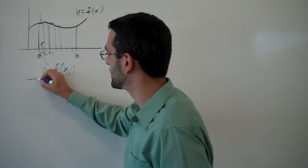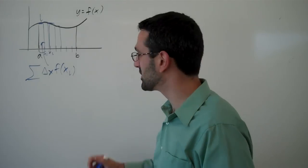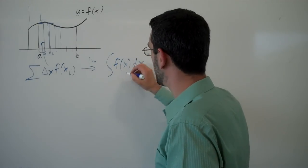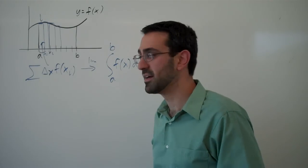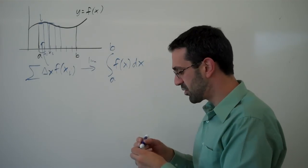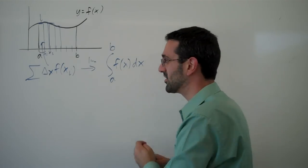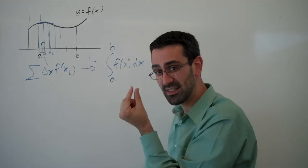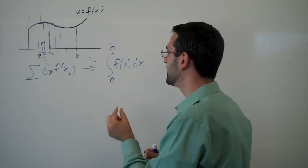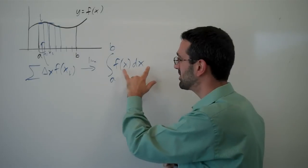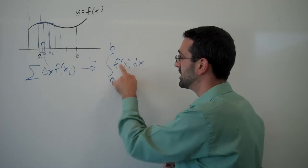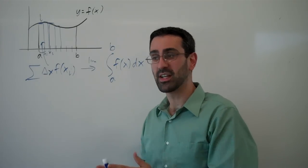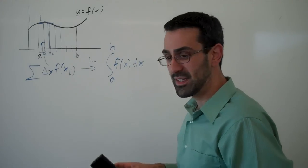We could then approximate the area using a summation, and then in the limit we turn this into the integral of the function from a to b. What we're really saying here is the function value — the height of the rectangle — times dx, where dx is now some infinitesimally tiny little width. We still have the same idea: height times width, area of a rectangle being added up from a to b. So we really think of this as slicing up an area into a bunch of little pieces.